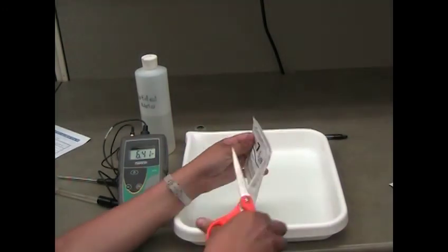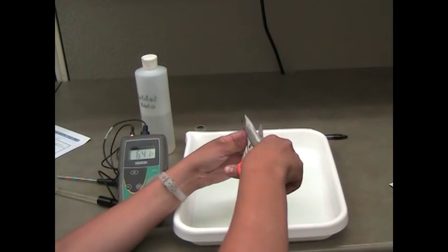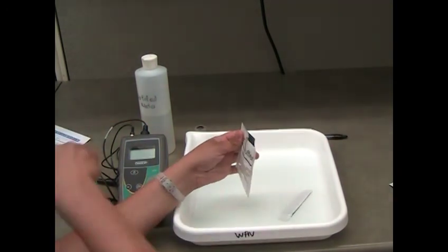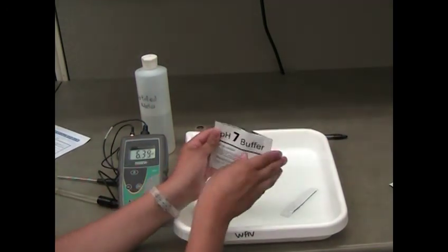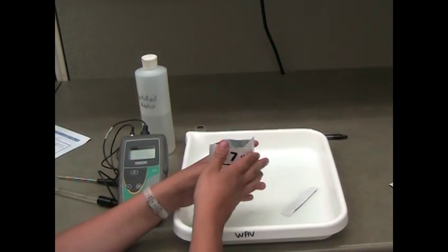Open the packet with the pH 7 buffer solution with a pair of scissors. Place the electrode and temperature sensor in the pH solution and submerge the electrode bulb completely.